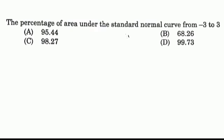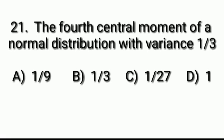Question 20: The percentage of area under the standard normal curve from −3 to +3. Answer: Option D, 99.73%.